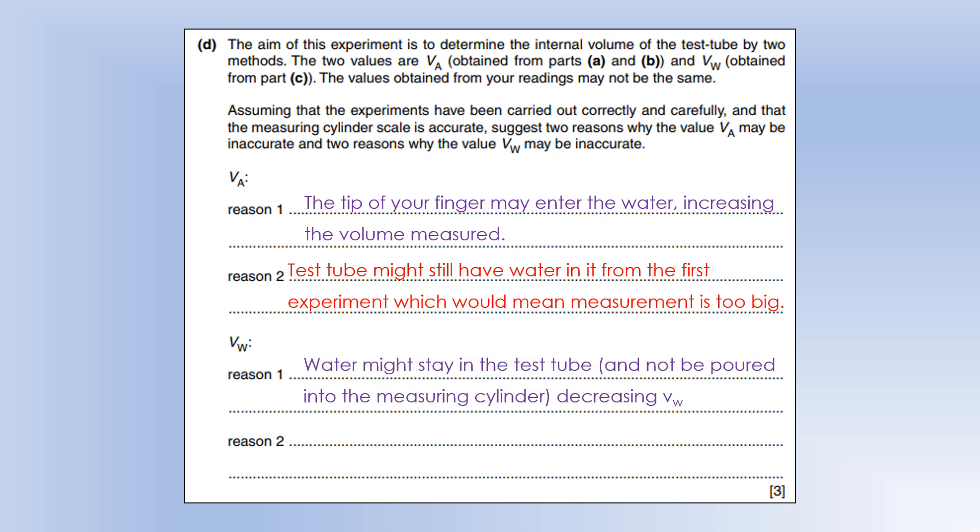In the second experiment we're pouring water from the test tube into the measuring cylinder, so some water might stick in the test tube and not go into the measuring cylinder, giving us a smaller volume of water than we should have. We've also used the measuring cylinder several times at this point, so we might have had some water left from previous measurements which would increase the value of the volume of water.